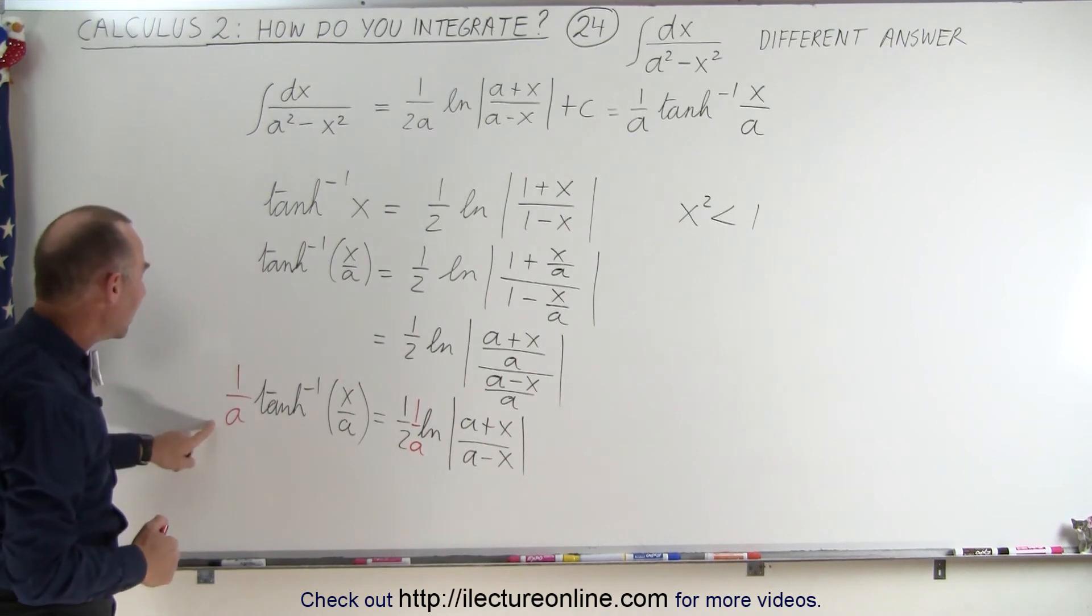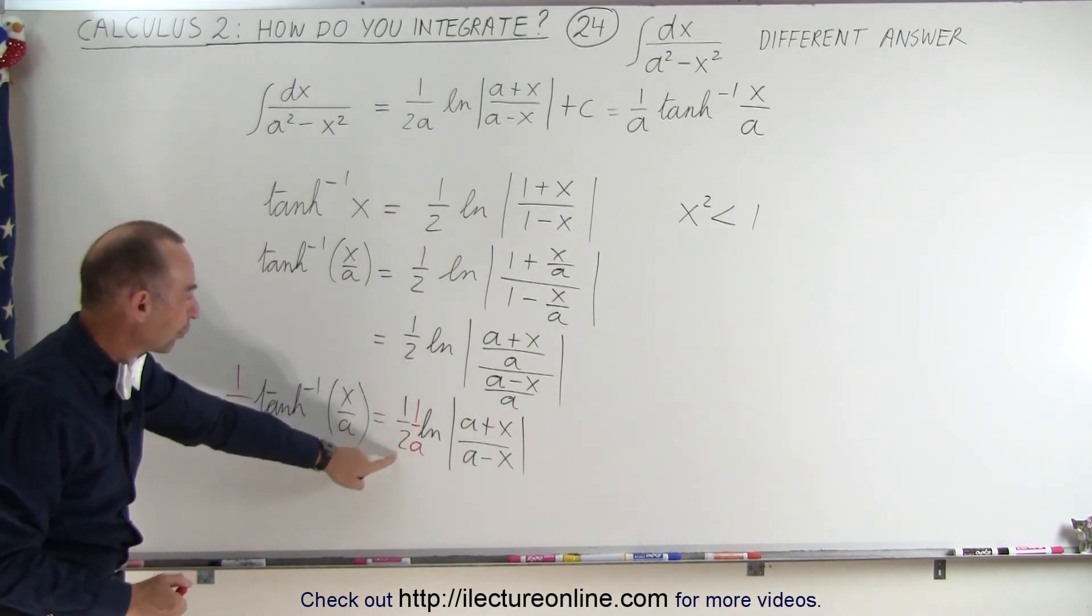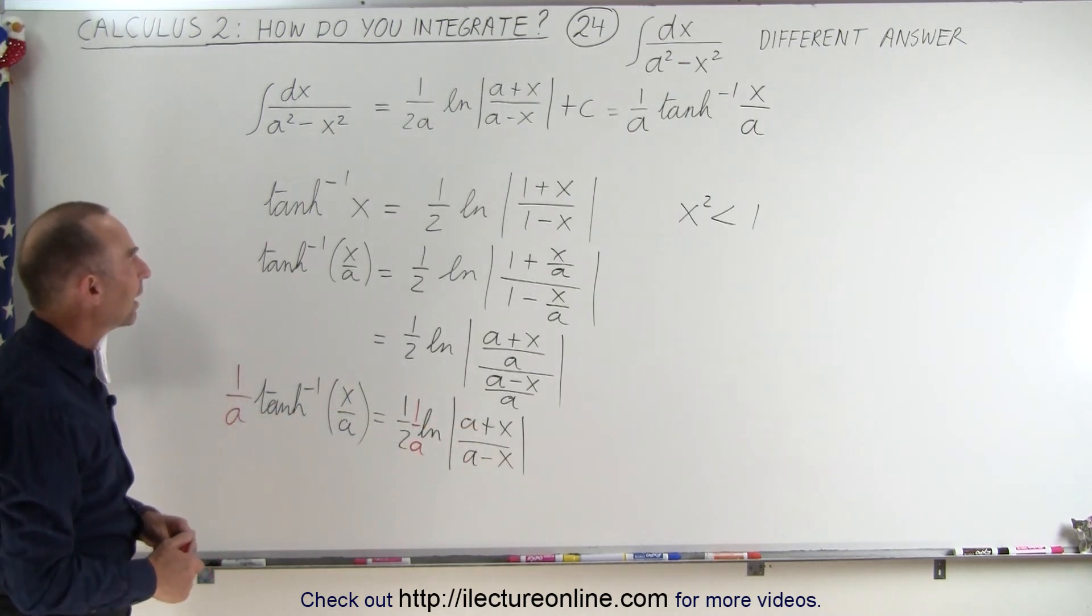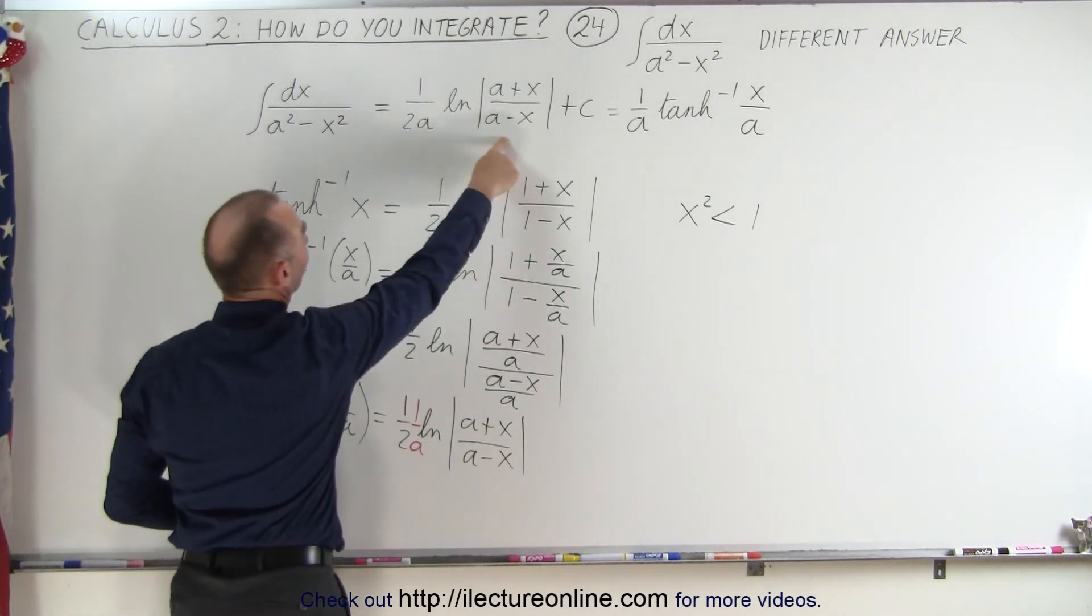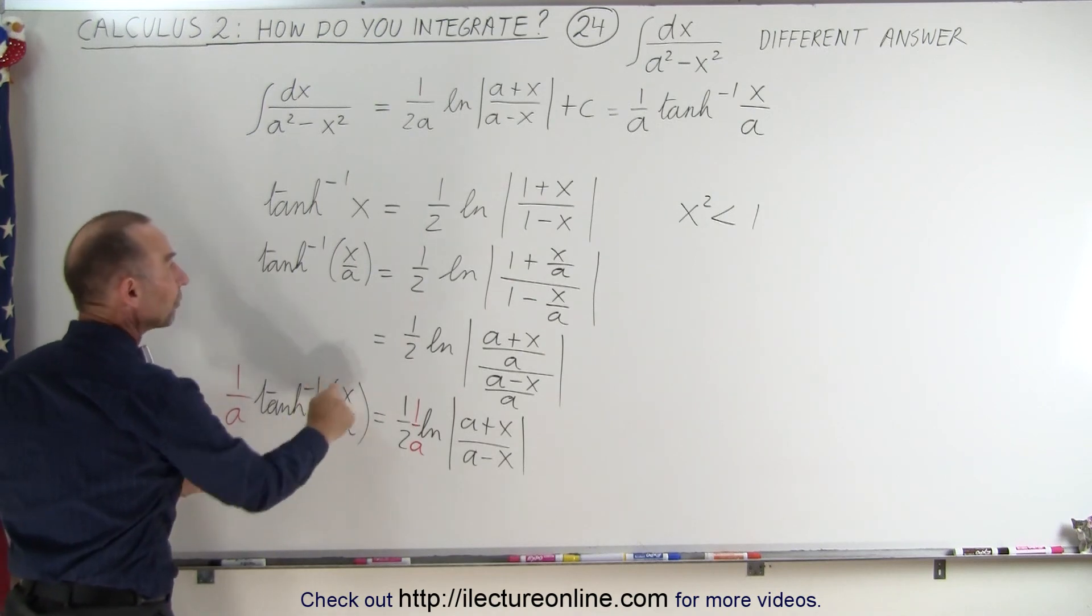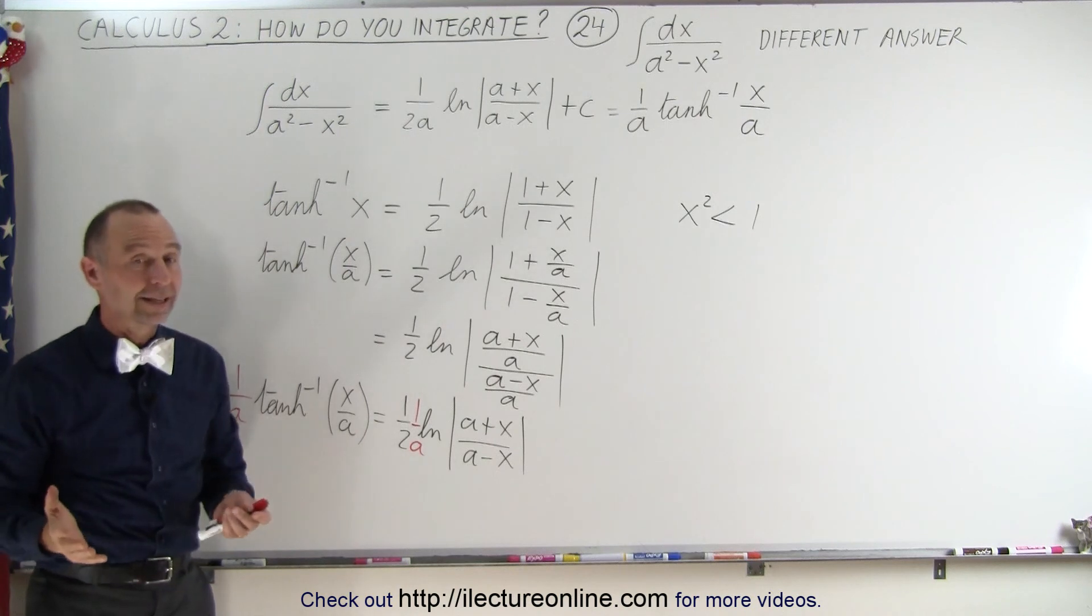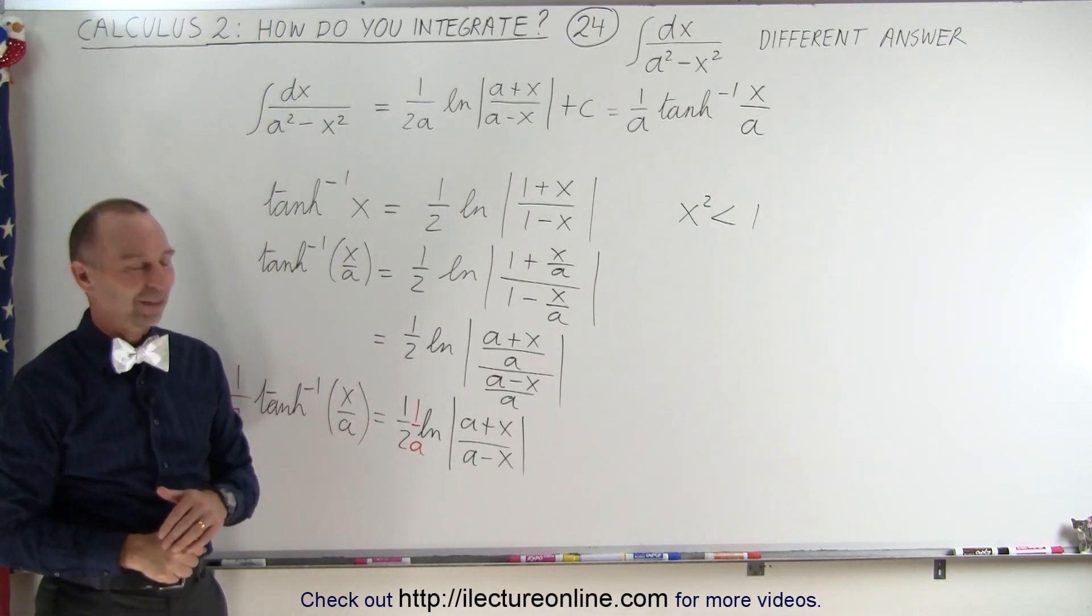So now I have one over a times the inverse hyperbolic tangent of x over a is equal to one over two a times the natural log of a plus x divided by a minus x. And then take a look here, this is exactly what I have over there, so this must be equal to one over a times the hyperbolic tangent of x over a, which is what I have over there. So it looks like they are equal, and that's how we know that. That's how it's done.